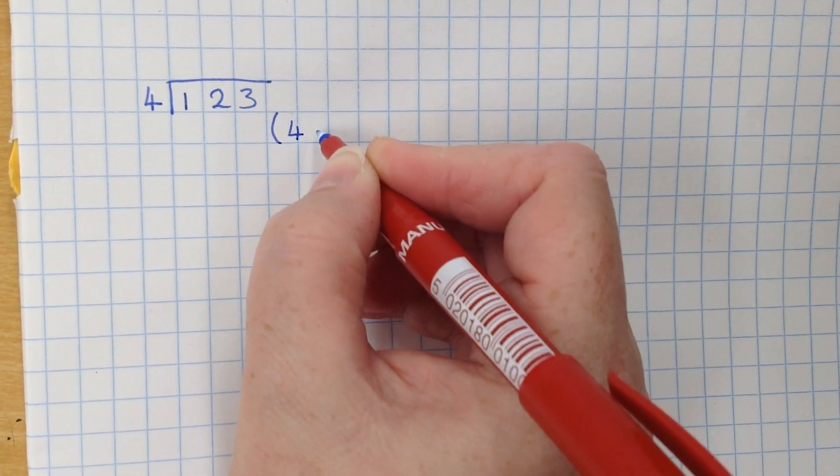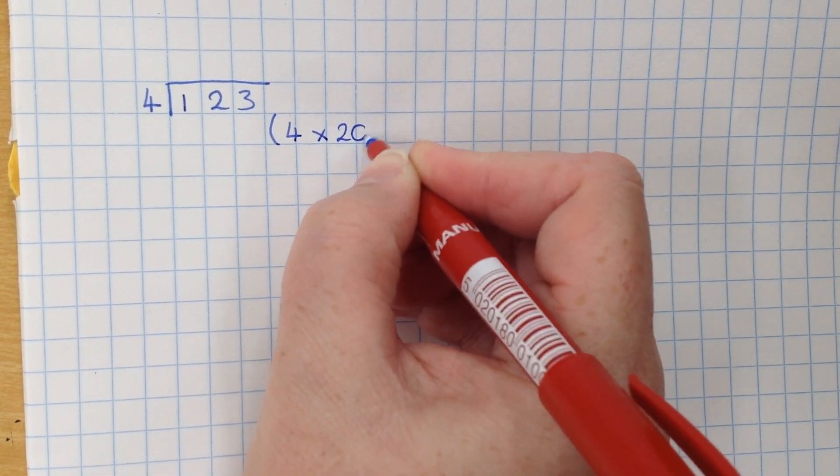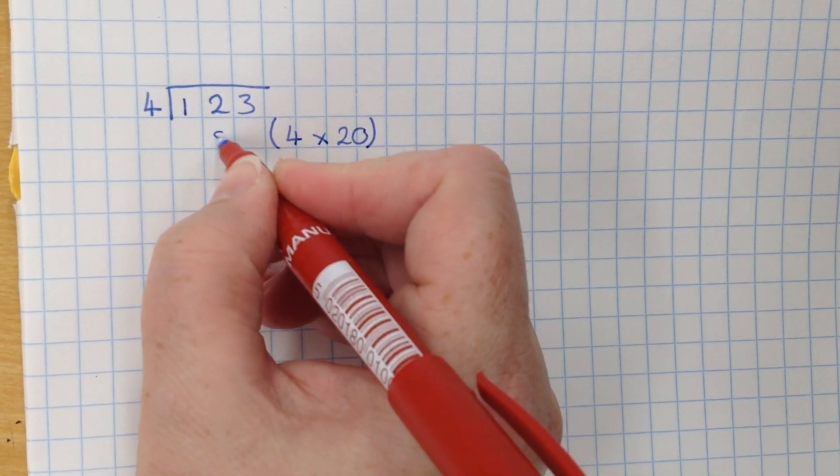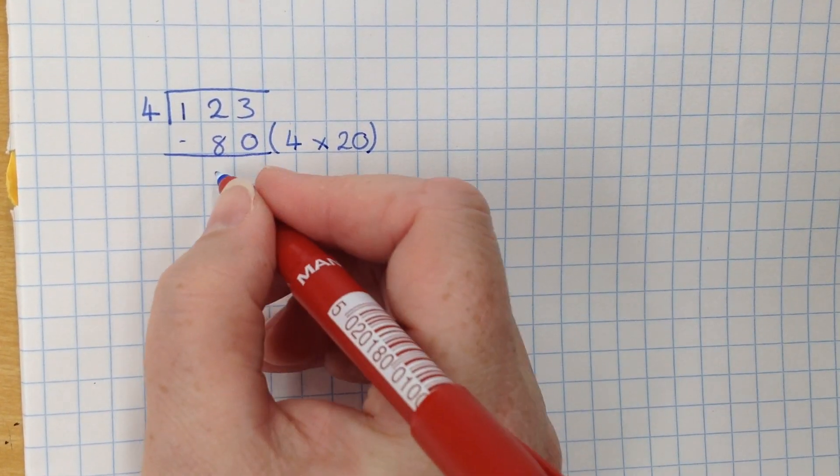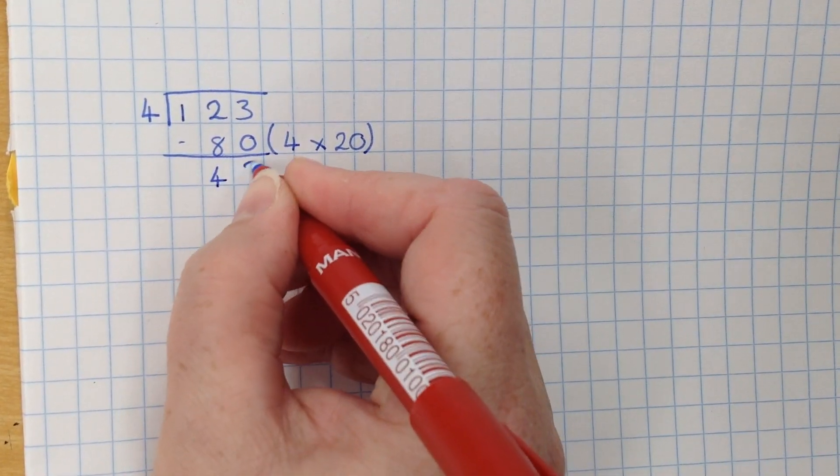So you might do 4 times 20 is 80. And you're subtracting that from the 123 to make that number smaller. So you're going to end up with 43.